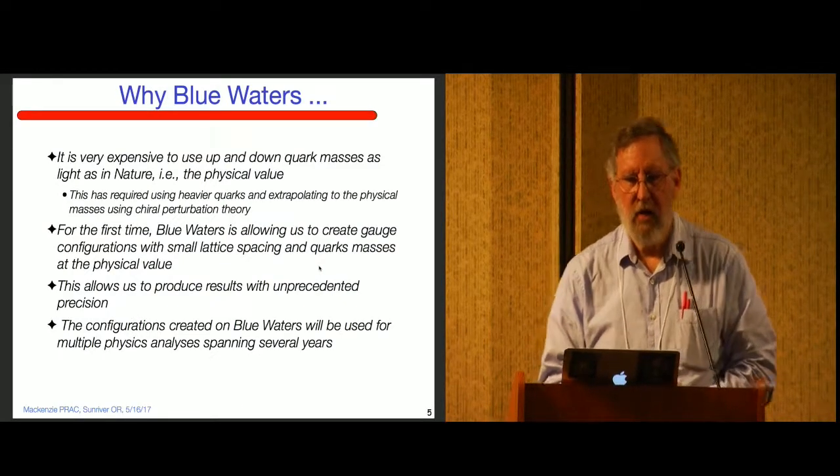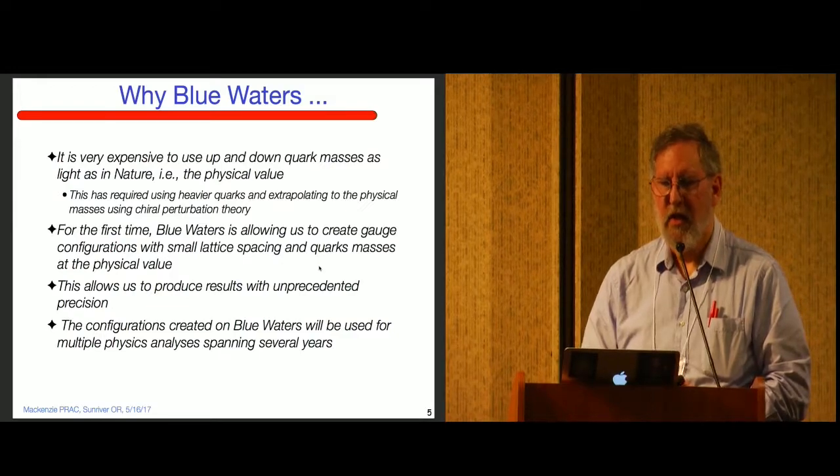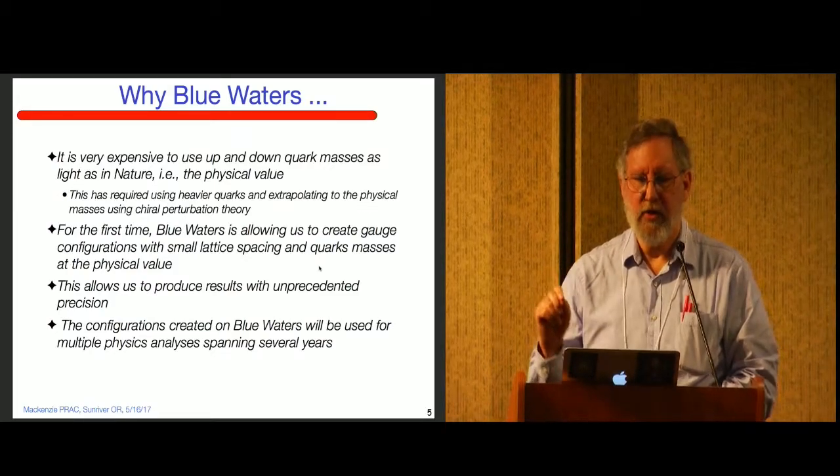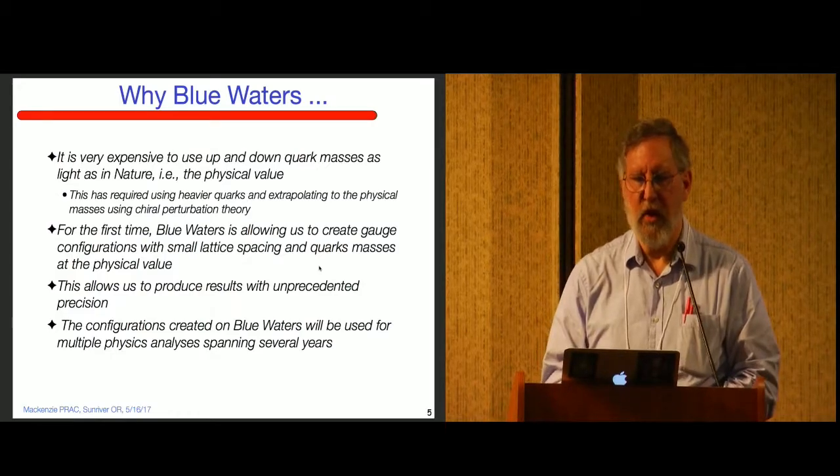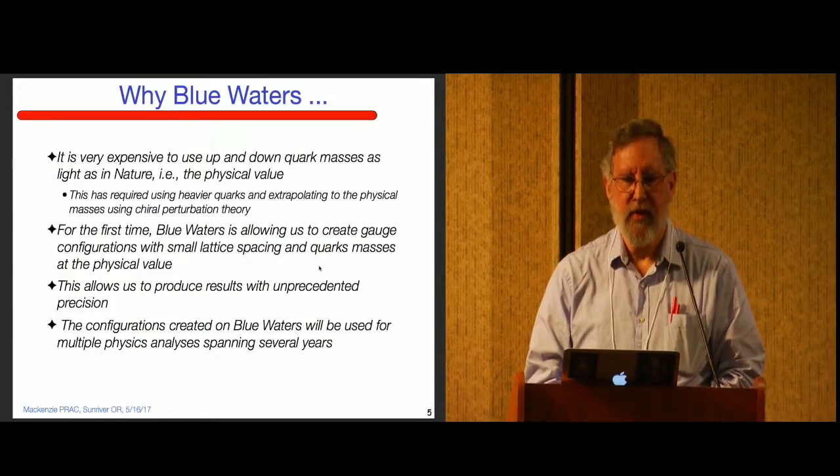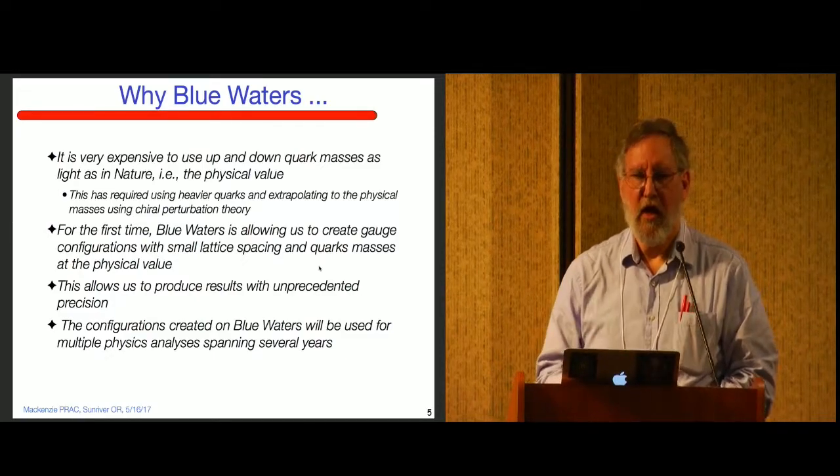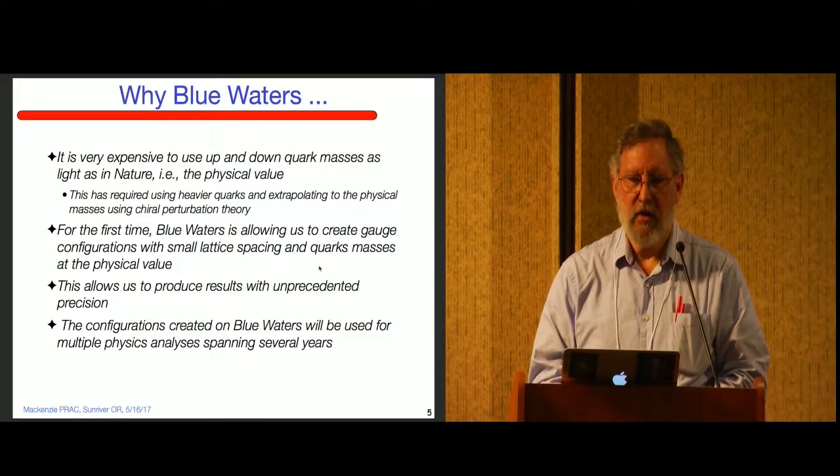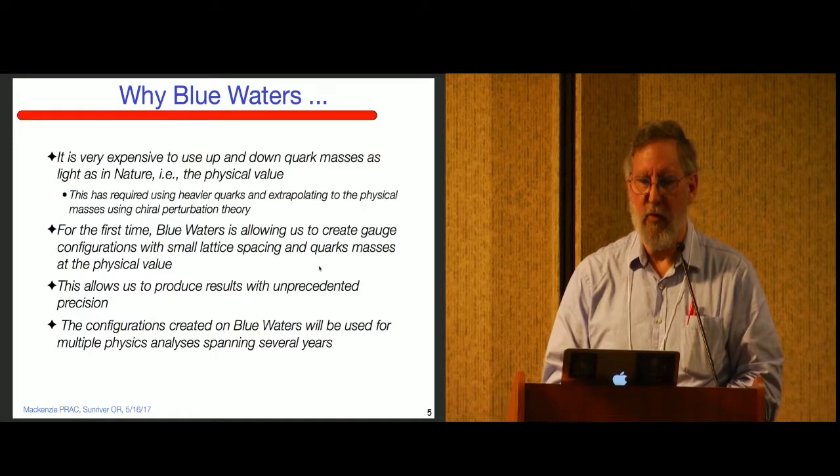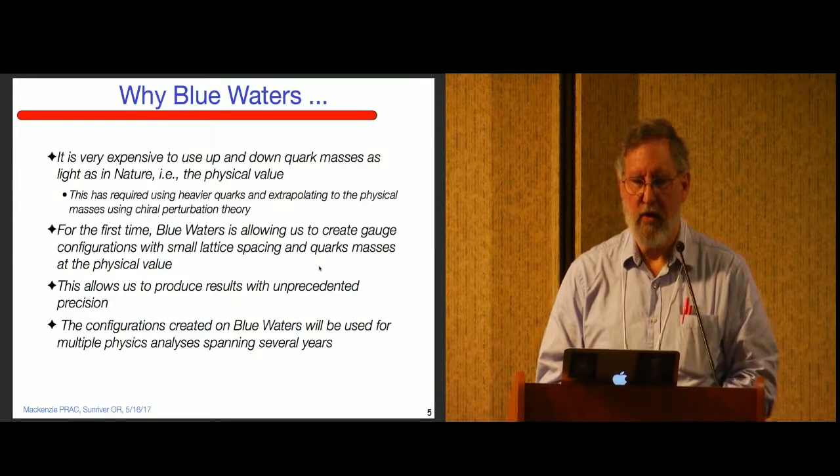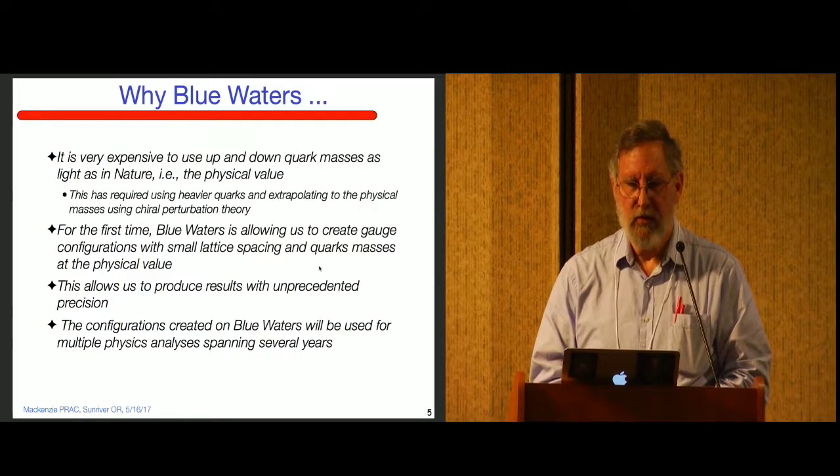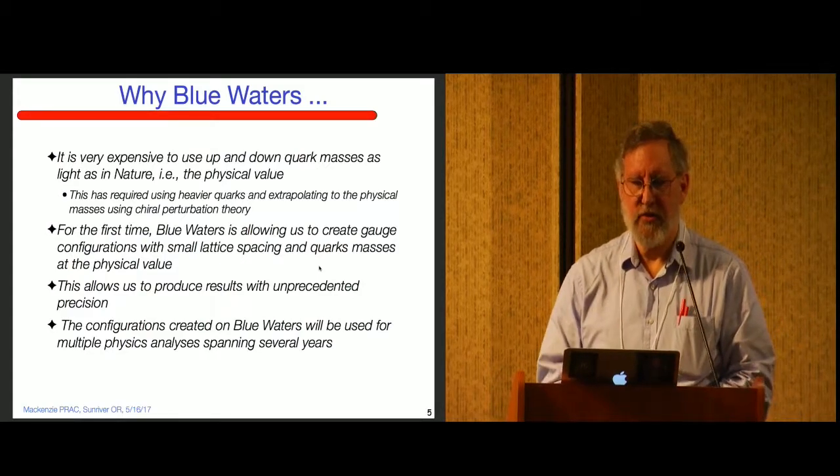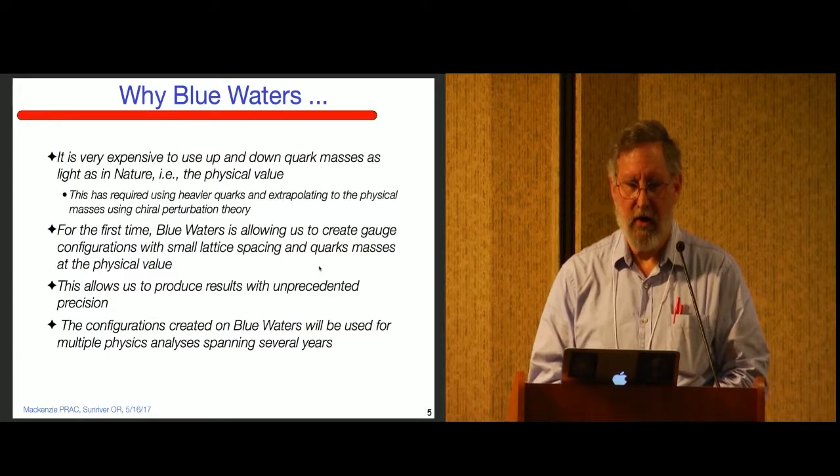Because of the GPUs, we can use that for some production running. Most of the capacity is actually in the CPUs, and that's what we've been using mostly. One great thing about Blue Waters is its high speed. It turns out it's very expensive to use up and down quarks as light as they are in nature. In the past, it's been necessary to use heavier quarks and extrapolate. But with Blue Waters, we can actually go down to the physical quark mass, which allows us to get unprecedented precision.